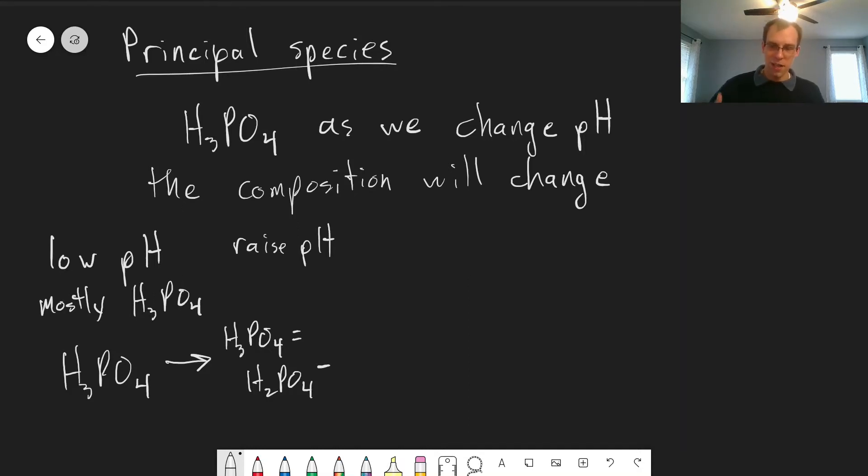So as we raise the pH, at some point we reach the place where these are equal. And this is something we can get from the Henderson-Hasselbalch equation. This will be equal to pKa1.